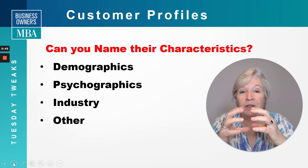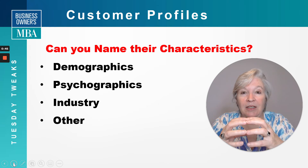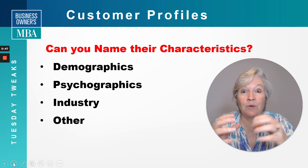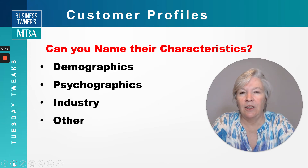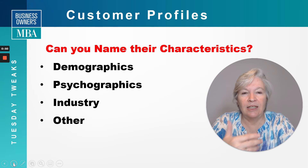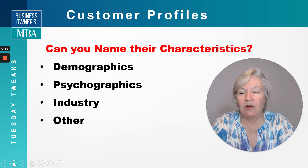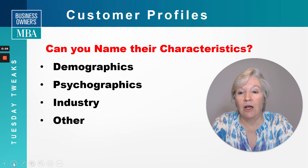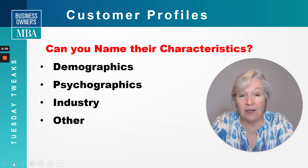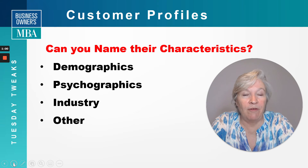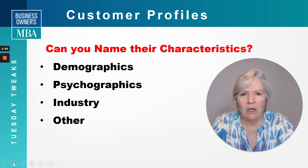Do you have 50% that have things in common — 60, 70, 80%? Demographics: age, sex, income levels, education levels. Psychographics — how they think, what they're looking for, what motivates them.